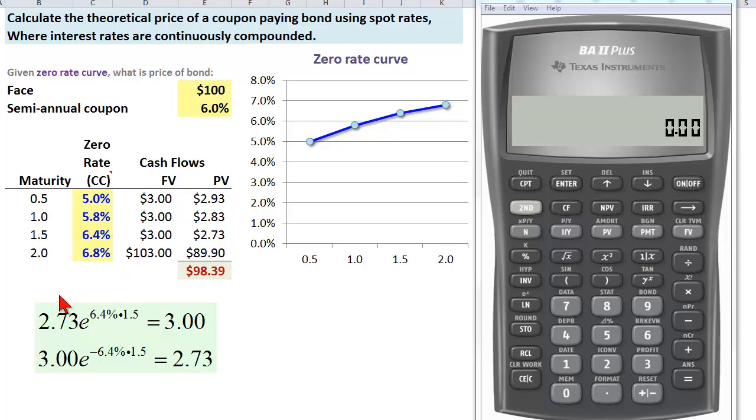Now the fact that these rates are continuously compounded means we need to lean on the exponential function which you probably used before. Just to reiterate here, notice that two dollars and 73 cents if we want to compound that continuously at a rate of 6.4 percent per annum over 18 months which is 1.5 years, this is how we would do that.